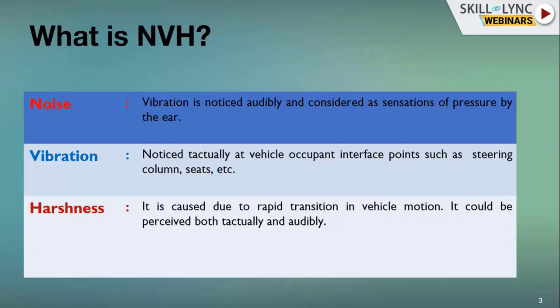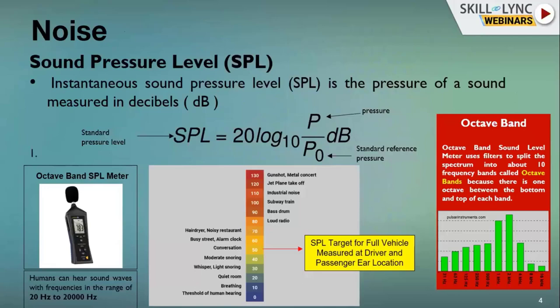Noise is measured using octave band SPL meters or sound pressure level meters. When a pressure difference is created at the ear, it is converted using the SPL formula into a sound pressure level value. Based on the measured sound pressure level, we place values against a chart and find targets. For a full vehicle, a target of 50 decibels is used — at 60 decibels you reach the level of an alarm clock or busy street, which nobody wants in their vehicle.